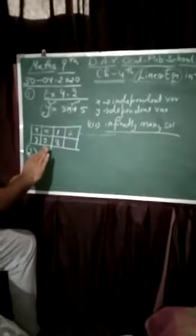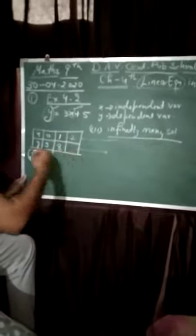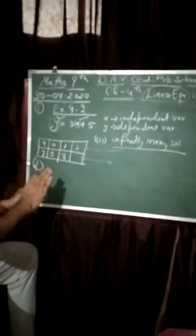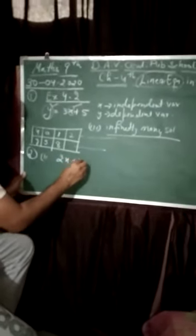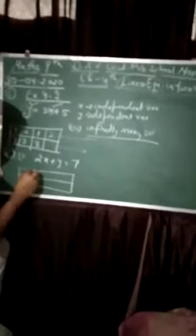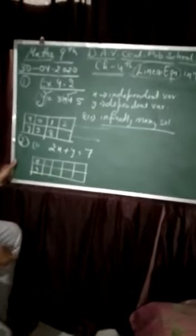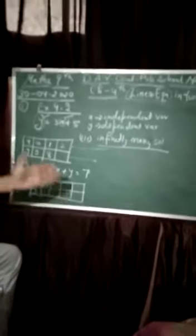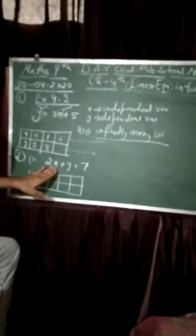Write four solutions for each of the following. First part we have x plus y equal to 7. First part, I'm going to find four solutions. We need to find x and y values such that the y values are in proper points, not fractions.